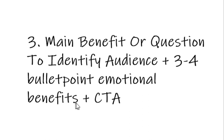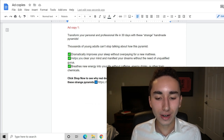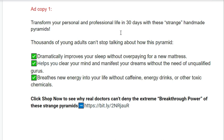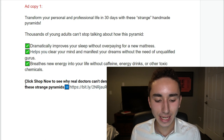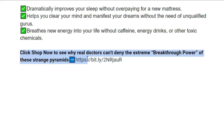The third formula is a main benefit or audience-identifying question, plus three to four bullet-point emotional benefits, then a call to action. For example: 'Transform your personal and professional life in 30 days with these strange handmade pyramids' — then bullets: dramatically improves your sleep, helps you clear your mind, breathes new energy into your life — then the CTA: 'Click Shop Now to see why real doctors can't deny the breakthrough power of these strange pyramids.'